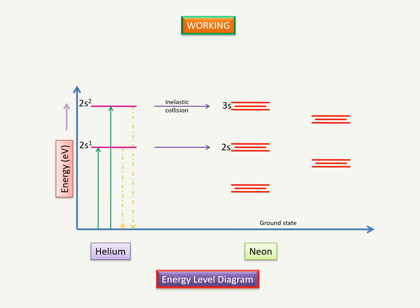We have two sets of sub-levels: 3s and 2s, and 2s and 2p and 3p. Between these levels, three predominant laser transitions take place.